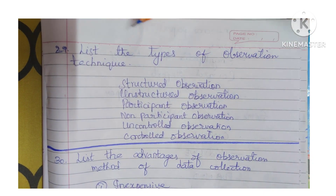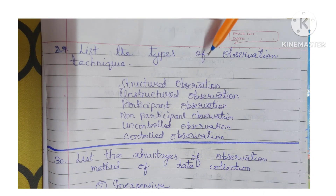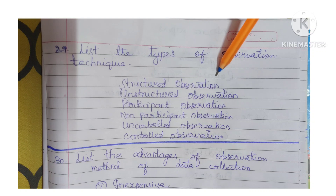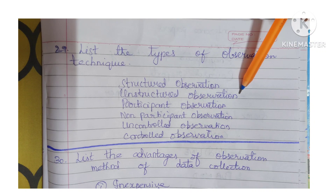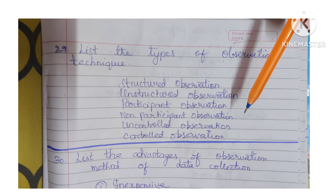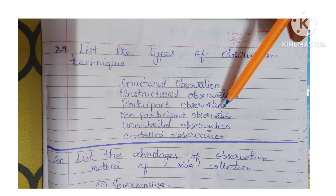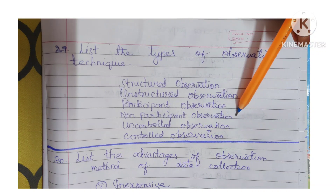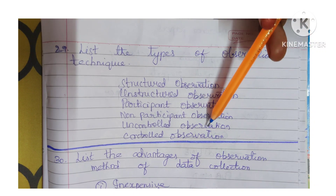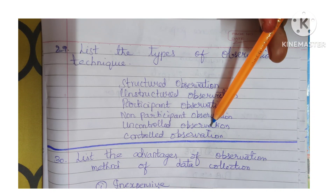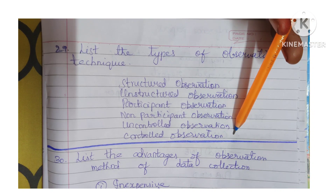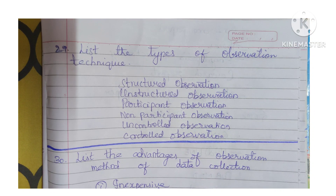Question 29: List the types of observation techniques: structured observation, unstructured observation, participant observation, non-participant observation, uncontrolled observation, and controlled observation.